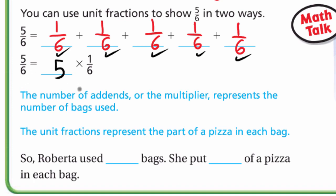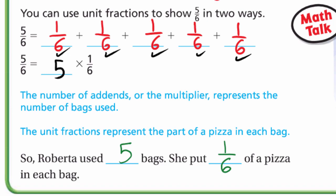So another way to write 5/6 is 5 × (1/6), and this is the goal of today's lesson — to write a fraction as a whole number multiplied by a unit fraction. The multiplier represents the number of bags used, and the unit fraction represents the part of a pizza in each bag. So Roberta used 5 bags and put 1/6 of a pizza in each bag.